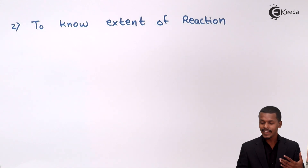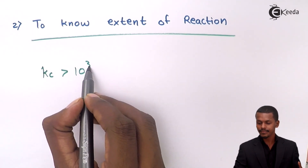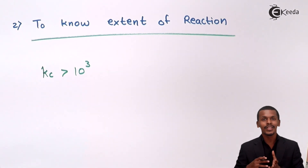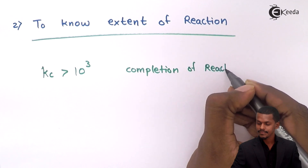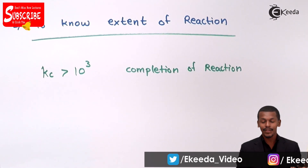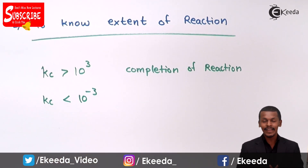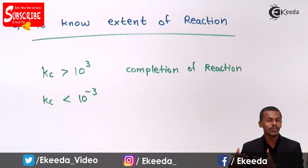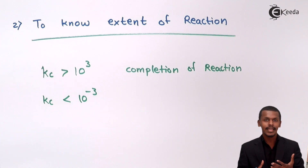Suppose we are tracking the concentration of reactants and products over time. If the value of Kc is more than 10 raised to 3, this indicates the reaction is going strongly in the forward direction — meaning the reaction has been completed or is on the verge of completion. But if the Kc value is less than 10 raised to minus 3, it indicates that the concentration of reactants is very much higher compared to products, meaning the reaction has not yet completed.